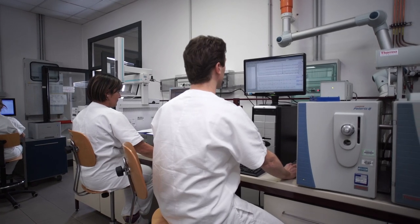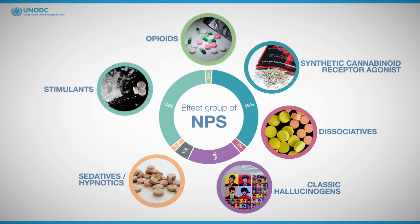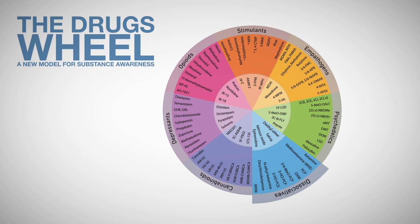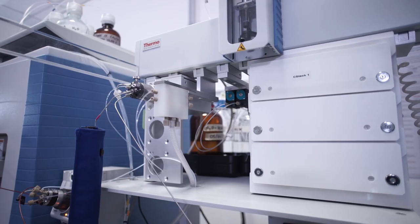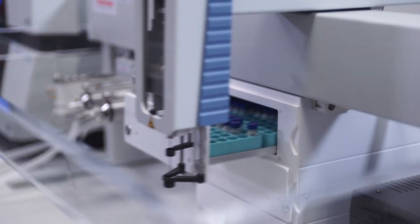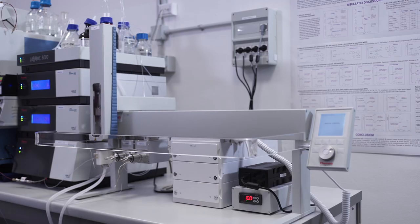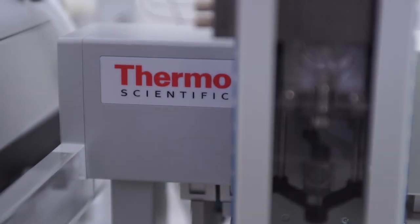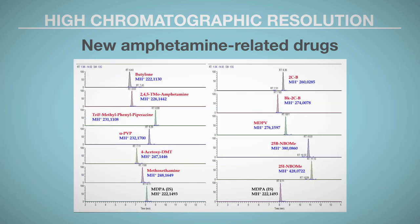Confirmation and quantification are carried out using reference materials when they are available. Because of the relentless growth in new psychoactive substances, leading forensic toxicology labs like the Laboratory of Environmental Hygiene and Forensic Toxicology are moving to high-resolution accurate mass LC-MS workflows. LC coupled with high-resolution accurate mass Thermo Scientific Orbitrap mass spectrometer technology provides several unique benefits, allowing identification and quantification of traditional and new illicit drugs with greater speed and confidence. High-resolution accurate mass and full scan capabilities capture all sample data all the time, allowing retrospective data analysis to be performed without repeating experiments.